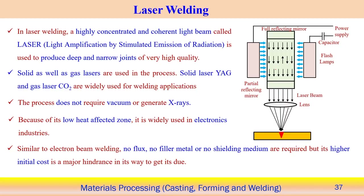In a typical laser welding system, if you follow this figure, there is some kind of laser light source — generation of the laser light — and we create a laser beam which must be parallel coming out from the laser system. Using some kind of lens, we focus it on the workpiece material as per our requirement.